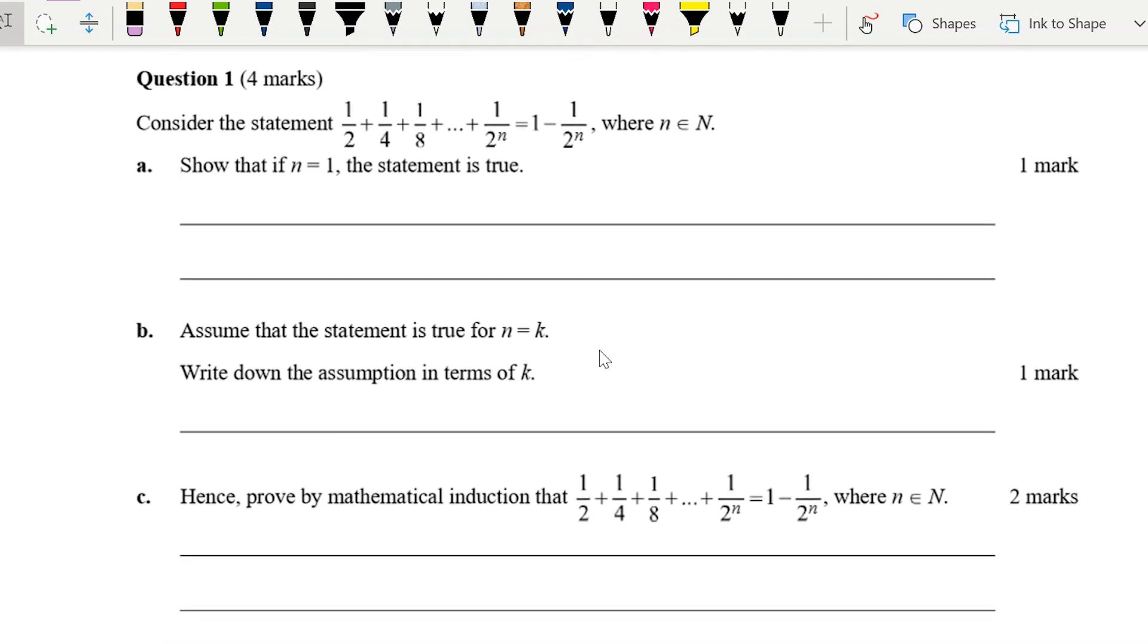It's four marks, but they've broken it up into part A, part B, and part C, which I think is quite nice because part A is one mark: show that if n is one, the statement is true. This is the base case—for induction we always need to do the base case, which is the first of our numbers. If we're proving for all natural numbers, that's going to be n equals one. This should be quite straightforward; all we're going to do is sub n equals one into the left hand side, sub n equals one into the right hand side, and show that they're both equal.